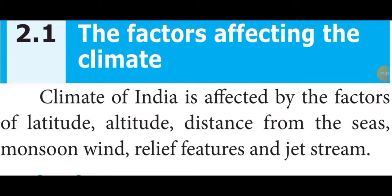The next question: what are jet streams? Jet streams are the fast moving winds blowing in a narrow zone in the upper atmosphere. The onset of the southwest monsoon is driven by the shift of the subtropical westerly jet from the plains of India towards the Tibetan plateau. Easterly jet streams cause tropical depression during both the southwest monsoon and retreating monsoons.